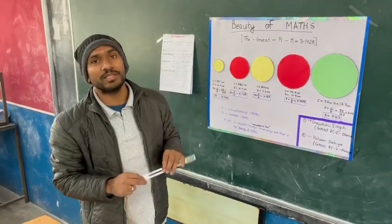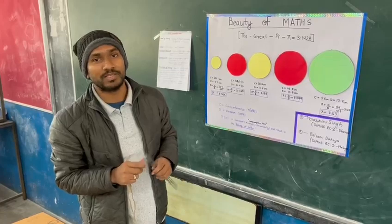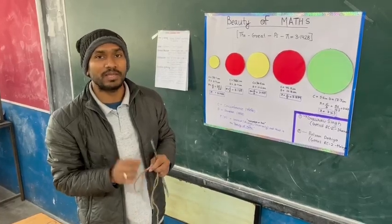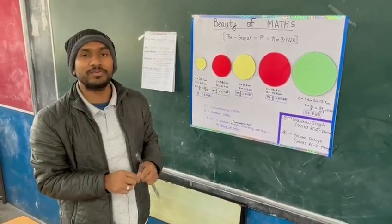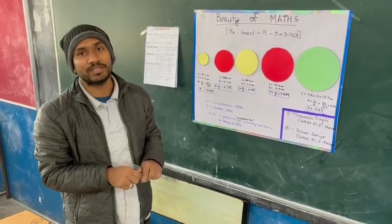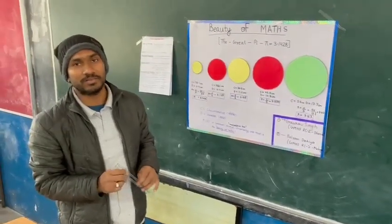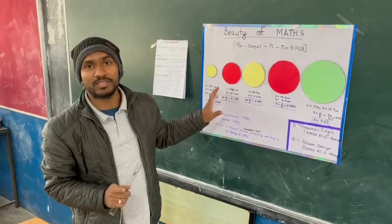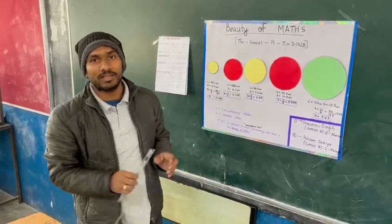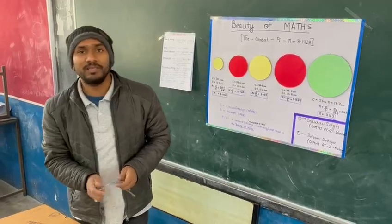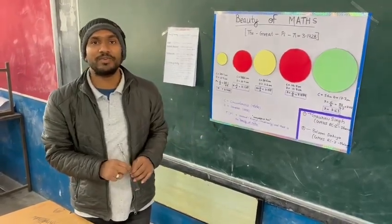The beauty of mathematics lies in the fact that it is constant everywhere. Whether you are measuring the size of a sand particle, or you go to any other planet in the universe like Mars, or you imagine any size of circle, the value will always remain the same. That is the beauty of mathematics — it is universal, and its principles are applicable everywhere.